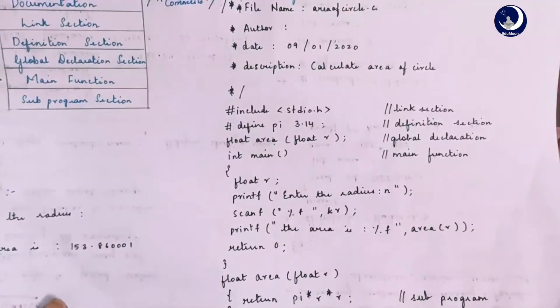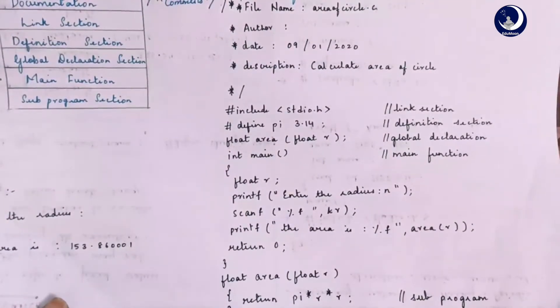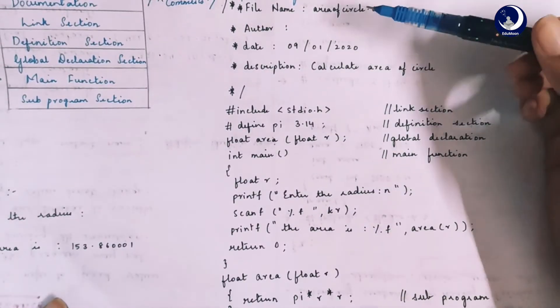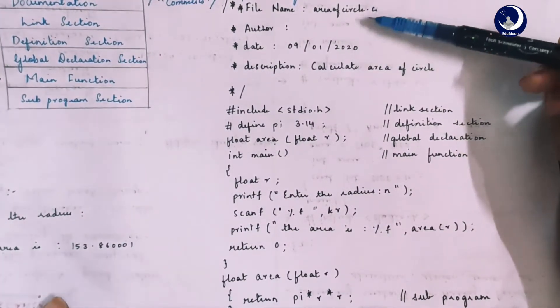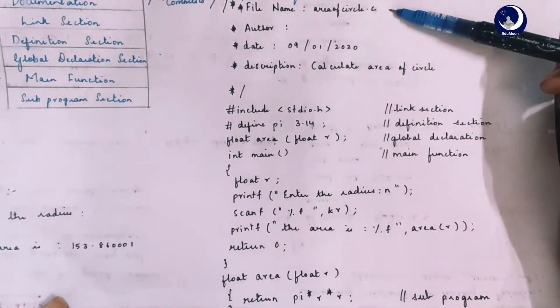Now, let us have a look at the sample program and compare our sections. The first section which includes the file name, the author, the date and the description come under the documentation section. This section is used to tell about the program.